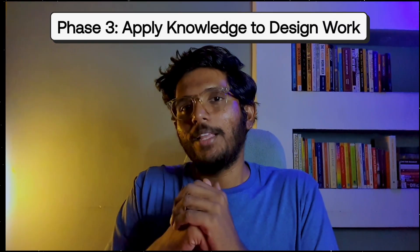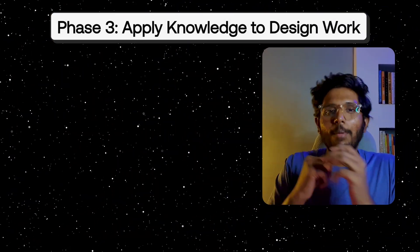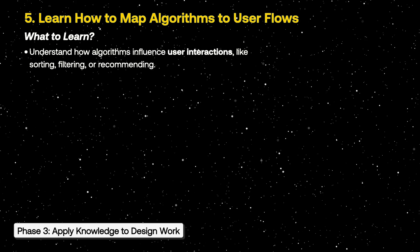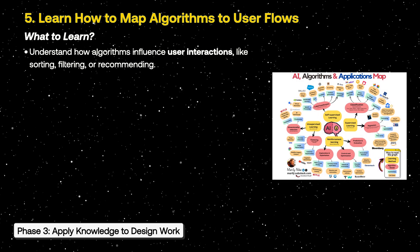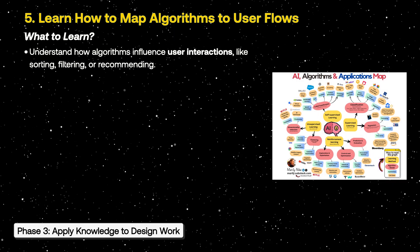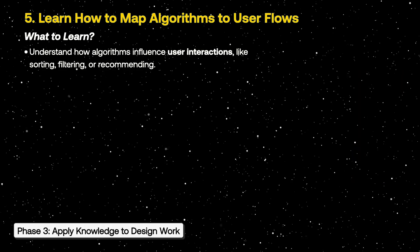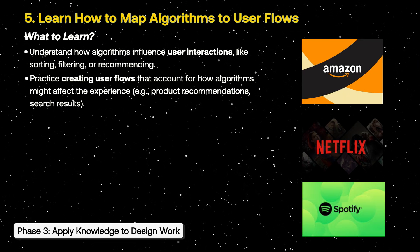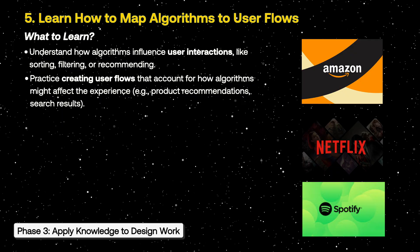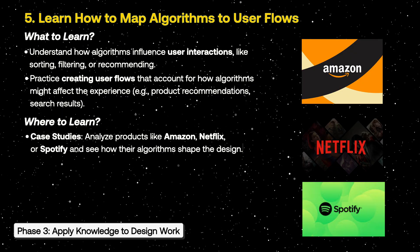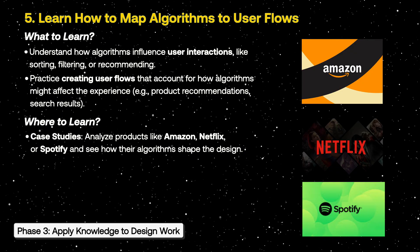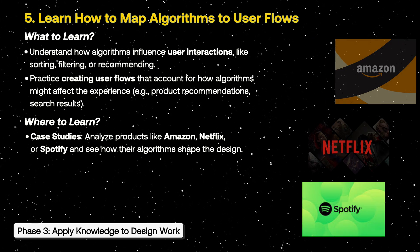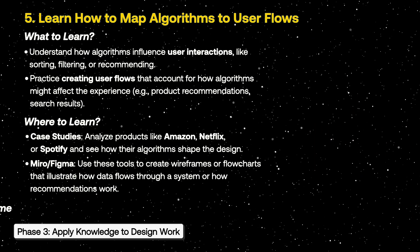In the third phase, you can apply algorithmic thinking to design. Study how platforms like Amazon, Netflix, and Spotify shape their design decisions using algorithms. With that knowledge, you can learn how to shape your own design. Spend about 1-2 weeks on this.